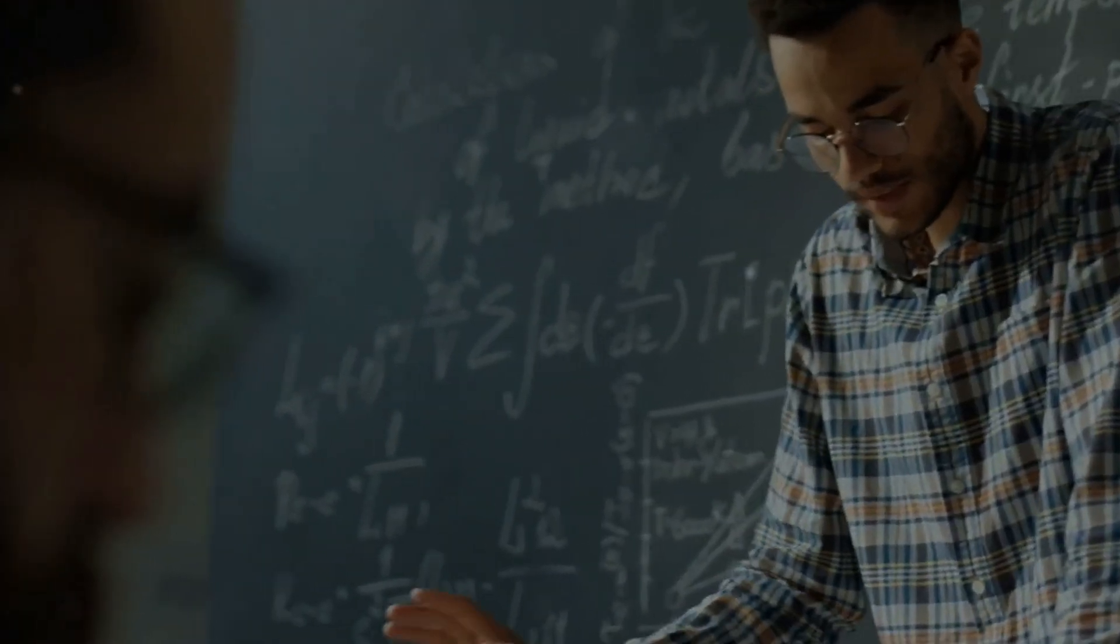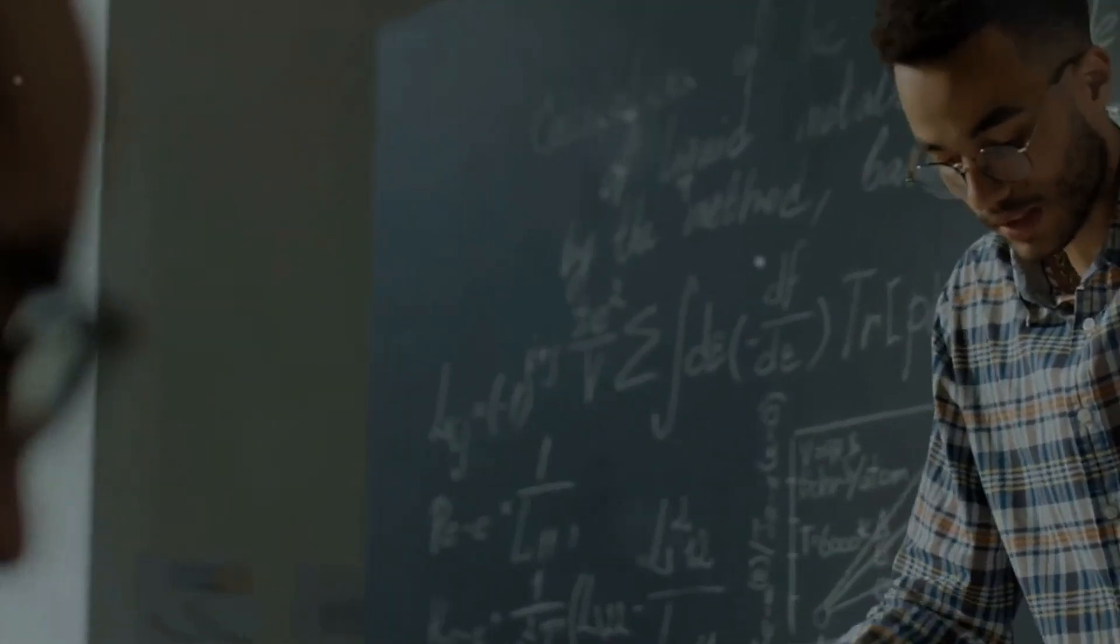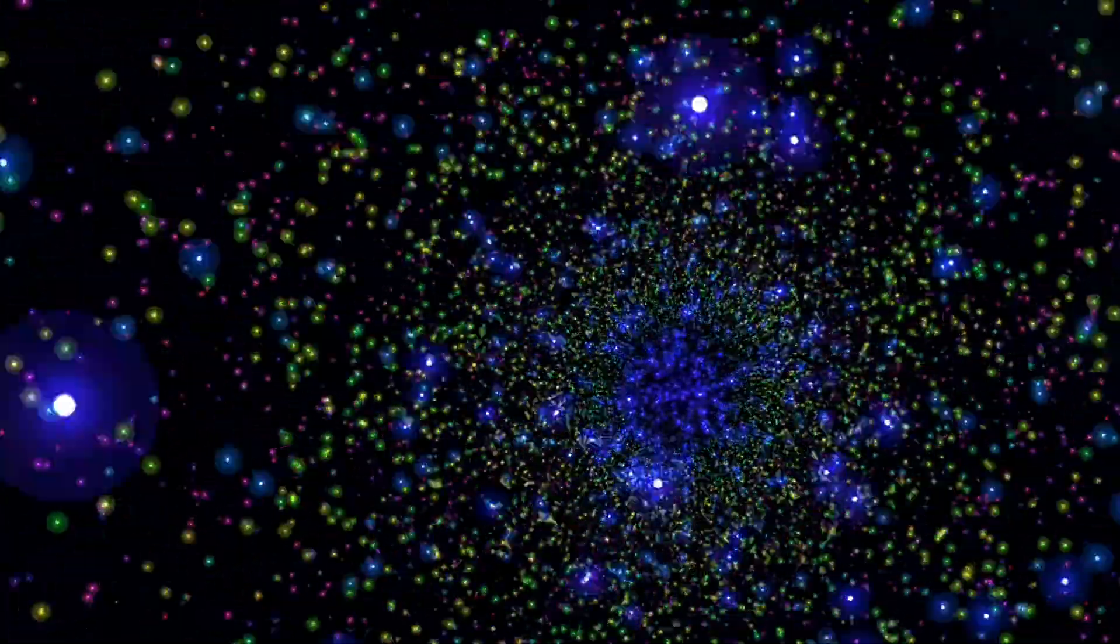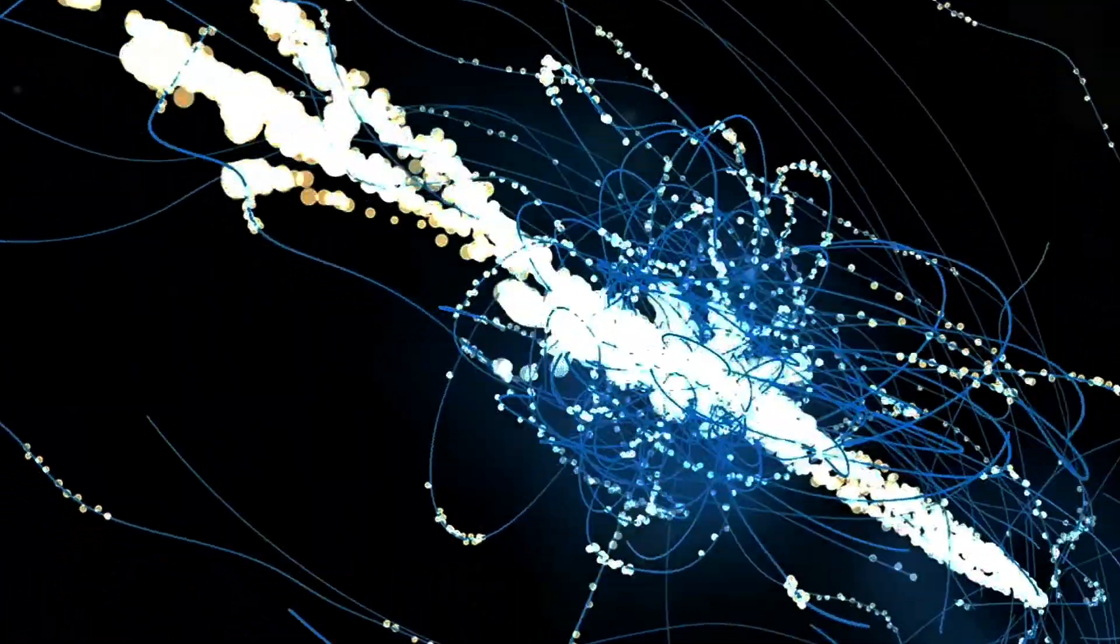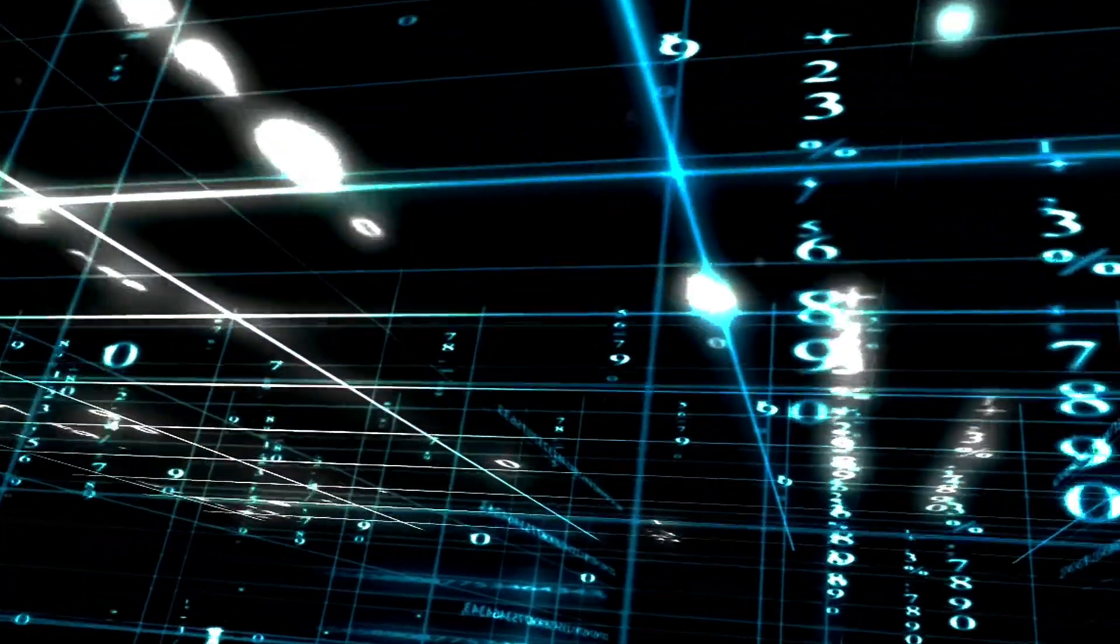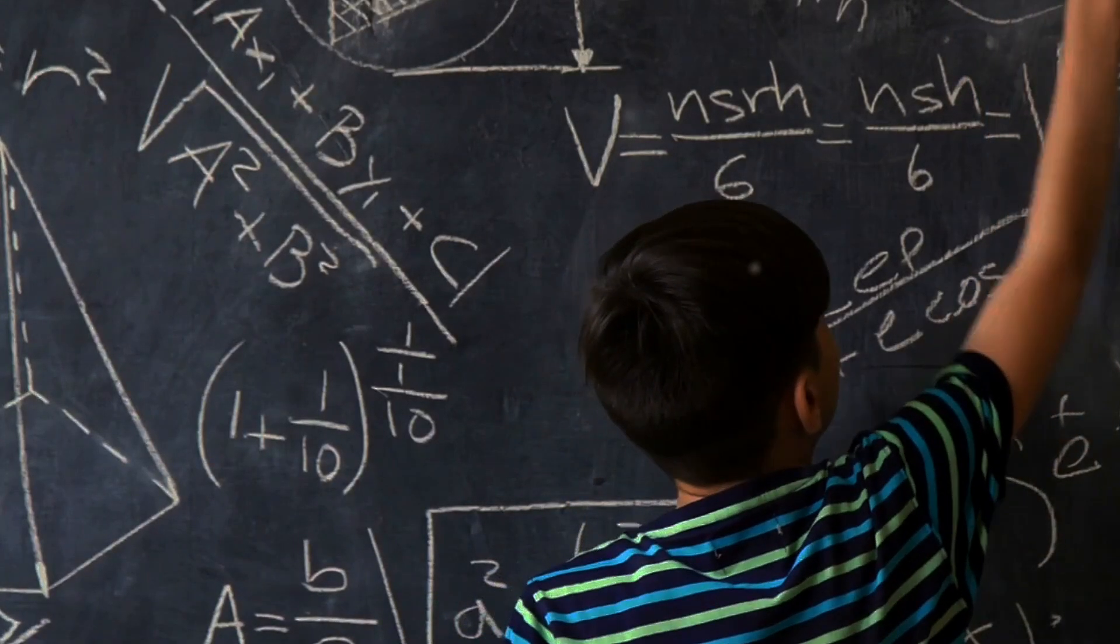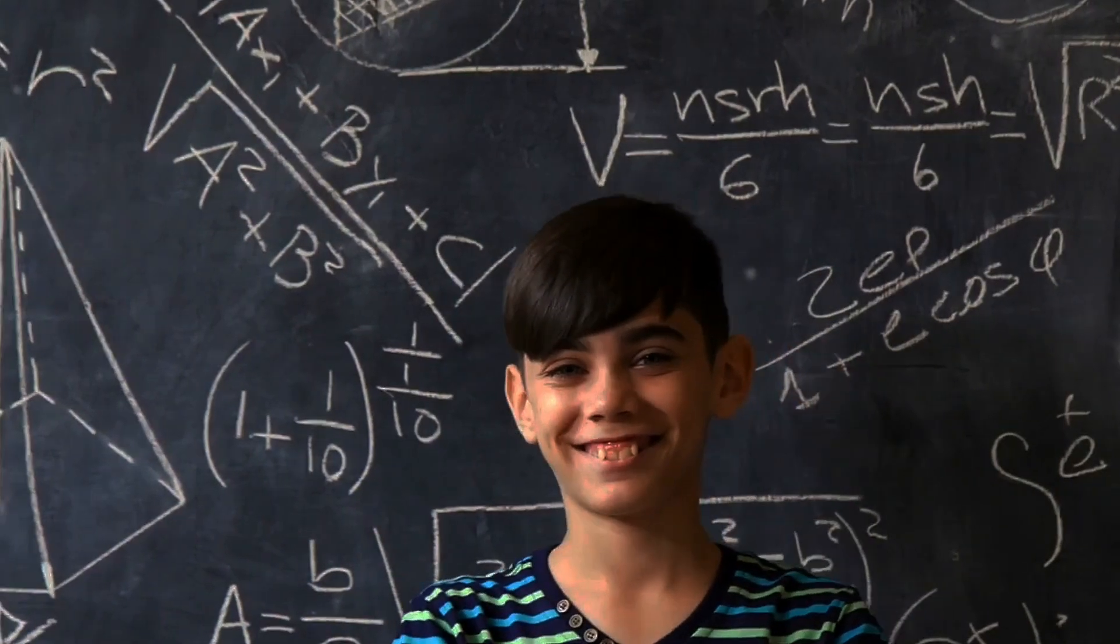But here's where the plot thickens. In the late 1990s, astronomers discovered something astonishing. The expansion of the universe is accelerating. This unexpected acceleration implies that there is some mysterious force pushing galaxies apart. This was termed dark energy. Dark energy is thought to make up about 68% of the universe's mass energy density. And guess what? The simplest explanation for dark energy is Einstein's cosmological constant.